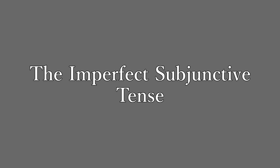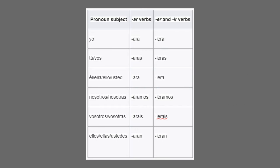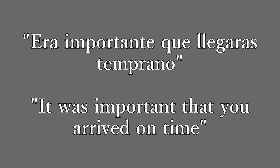Next up, we have the imperfect subjunctive. Using hablar: yo hablara, tú hablaras, él/ella/usted hablara, nosotros habláramos, vosotros hablarais, ellos/ustedes hablaran. Using comer: yo comiera, tú comieras, él/ella/usted comiera, nosotros comiéramos, vosotros comierais, ellos/ustedes comieran. An example for Impersonal expressions (I of WEIRDO): era importante que llegaras temprano — it was important that you arrived on time.